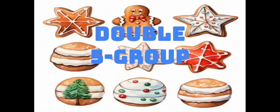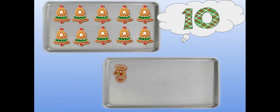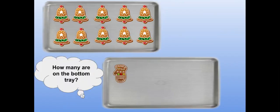Fluency is called double five group. How many cookies do you see on the top cookie tray? There are ten cookies on the top cookie tray. How many cookies do you see at the bottom? There is one cookie on the bottom tray.